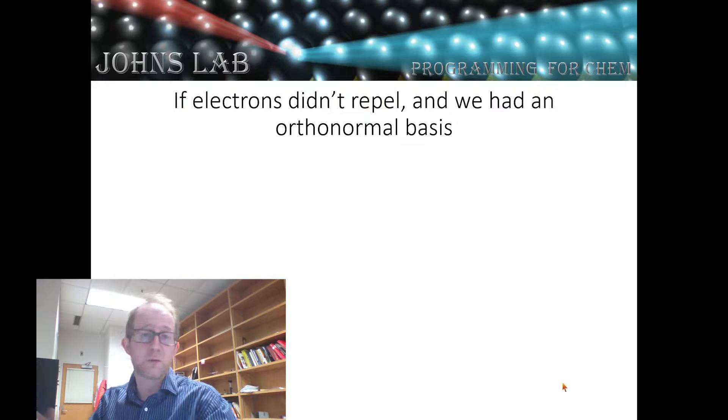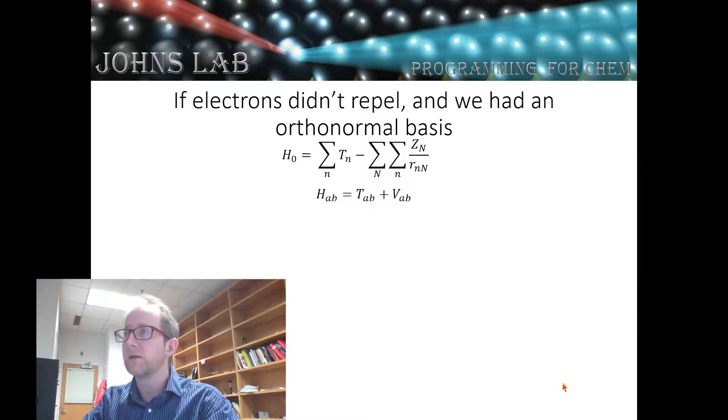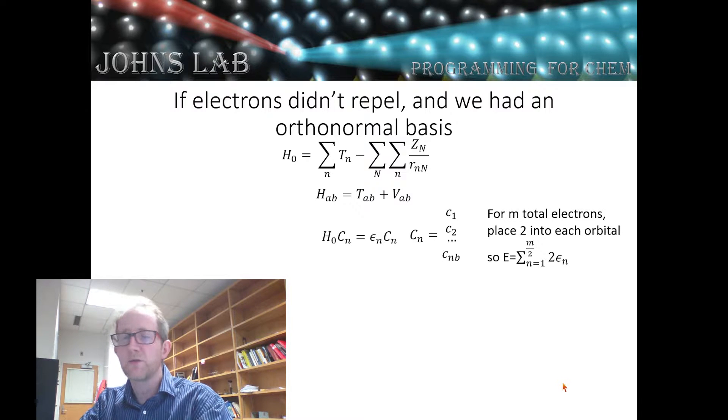If electrons didn't repel or they didn't interact in any way, then we could write a core Hamiltonian, which is just the kinetic energy of our electrons and the attraction to each of the nuclei, so the nuclear attraction operator.